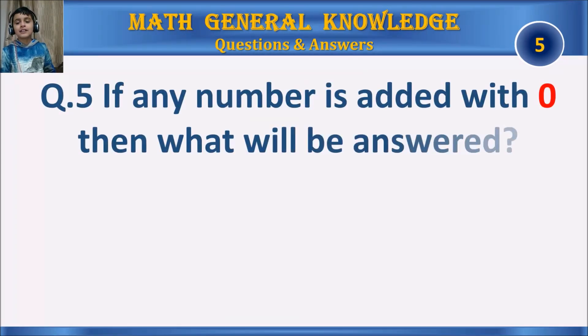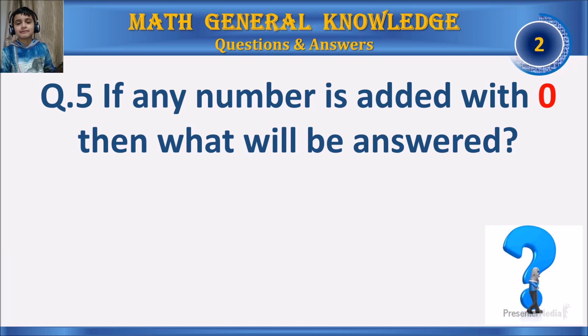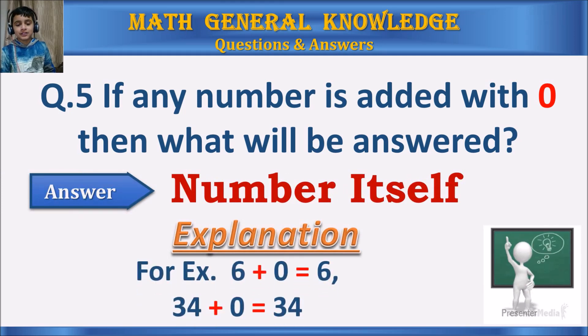Question 5: If any number is added with 0, then what will be answered? Your time starts. The answer is the number itself. For example, 6 plus 0 equals 6, and 34 plus 0 equals 34, and so on.